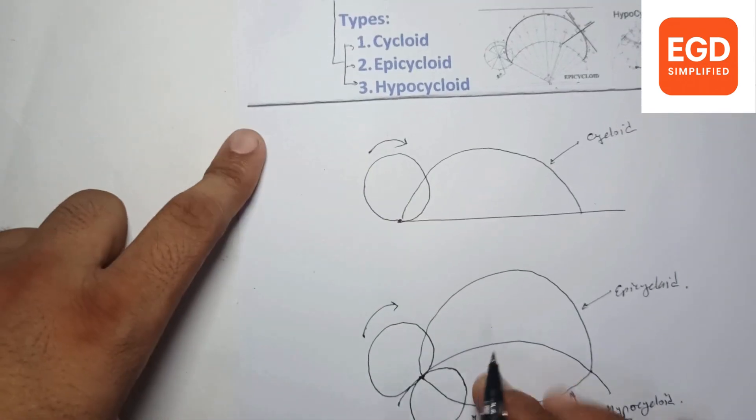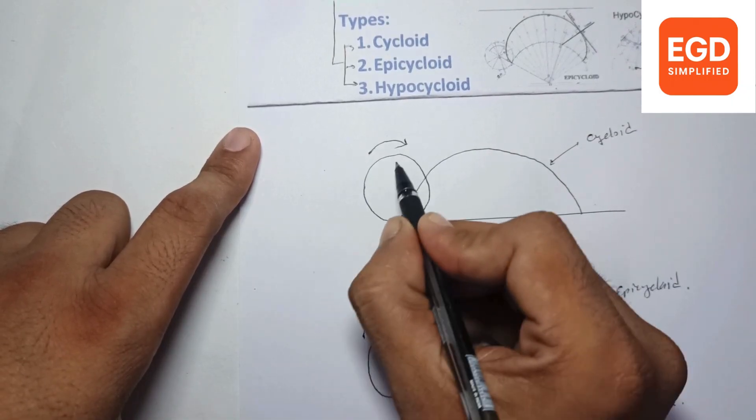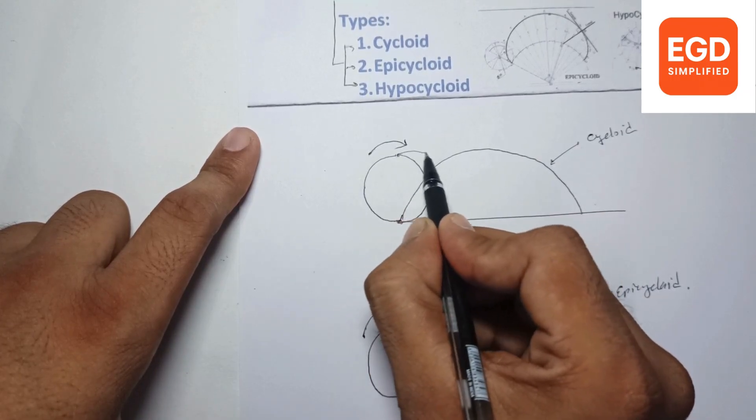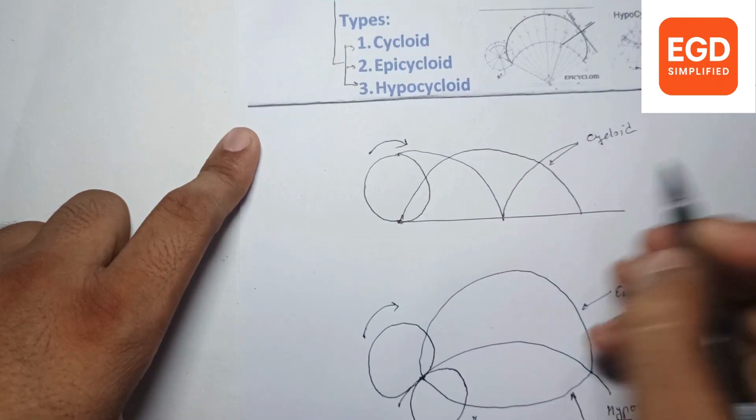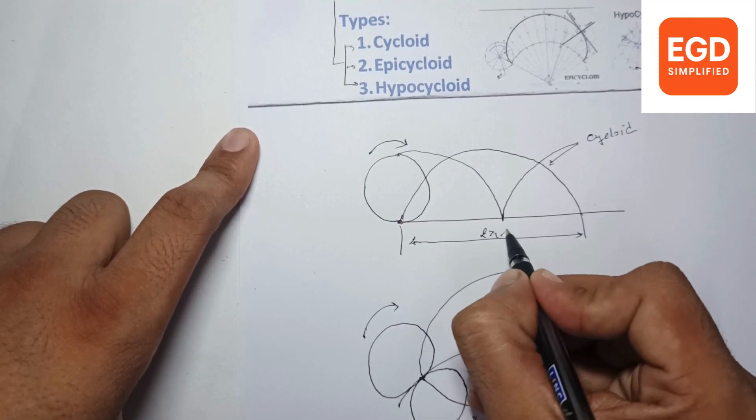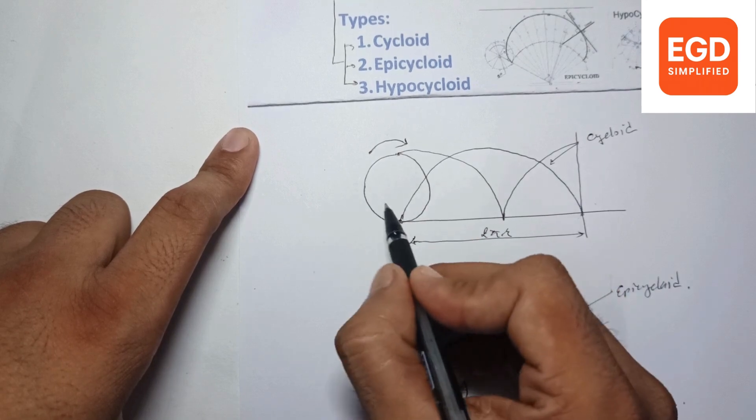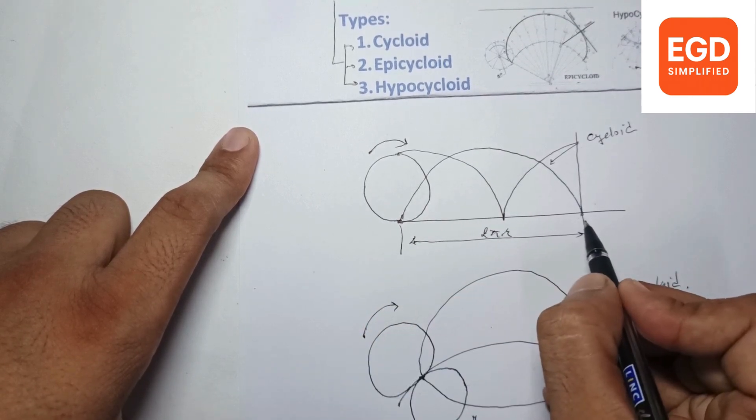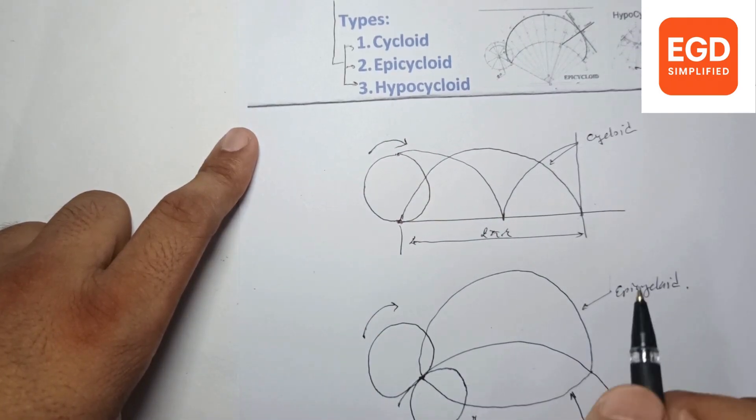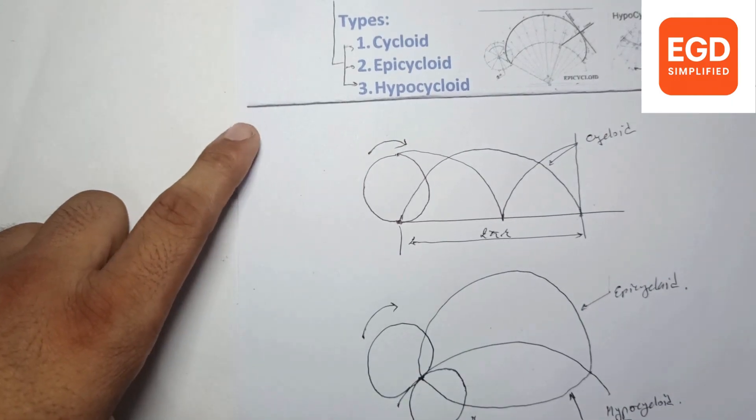In exams, the point given doesn't have to be on the circumference at the contact point. It could be on the opposite side of the contact point. The distance for one revolution is the perimeter of that circle, 2πr. We mark this distance, then divide the circle into 8 equal parts and this length into 8 equal parts. We can also do 12 equal parts. The more divisions we make, the more accurate the curve will be.